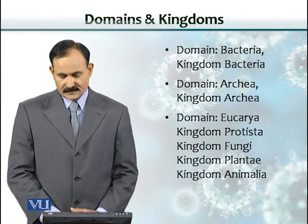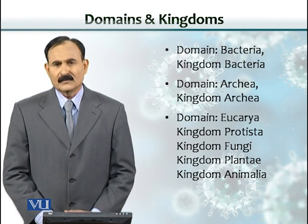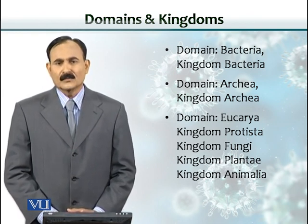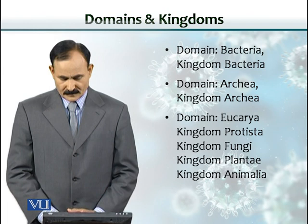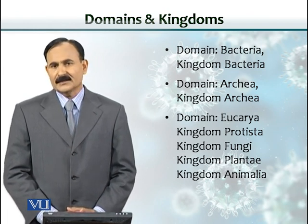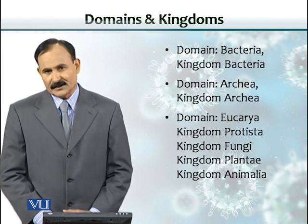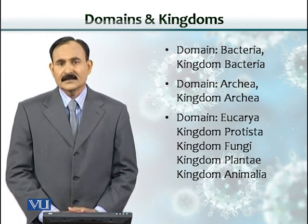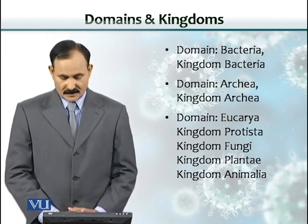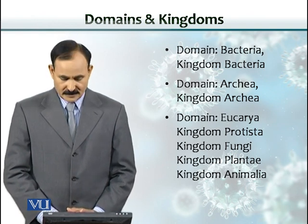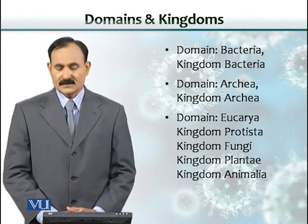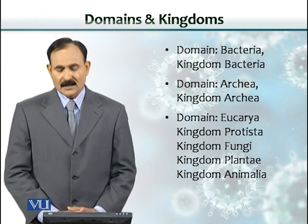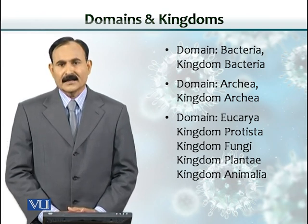This slide indicates what each domain contains. Domain Bacteria has the kingdom Bacteria, domain Archaea has the kingdom Archaea, and domain Eukarya contains four kingdoms: Protista, Fungi, Plantae, and Animalia.